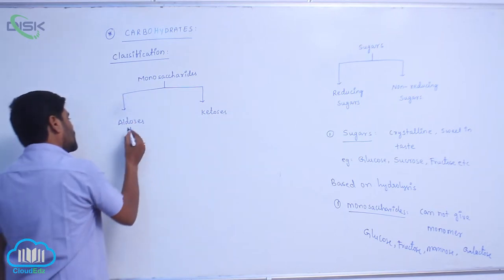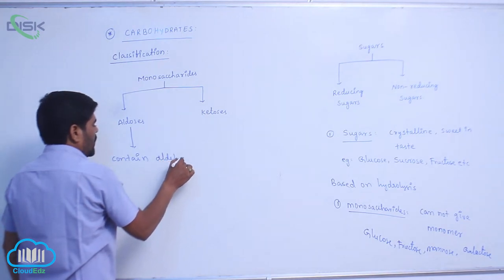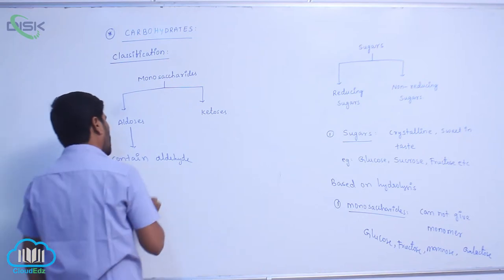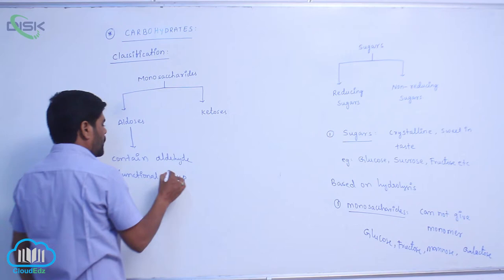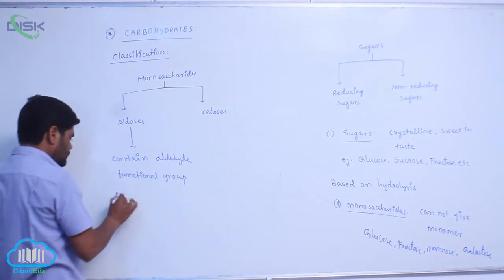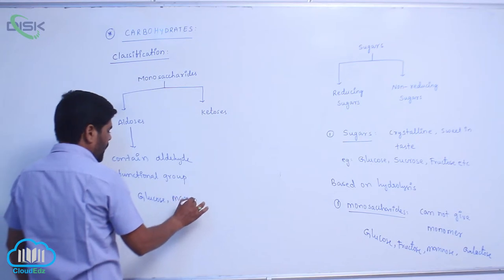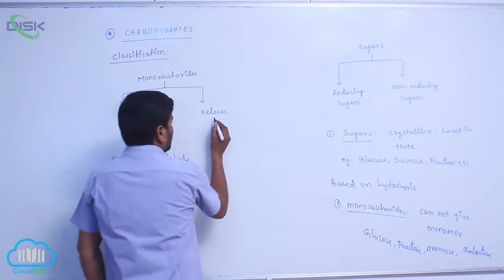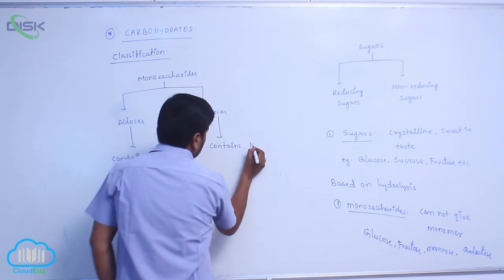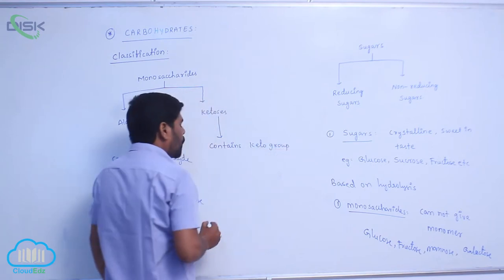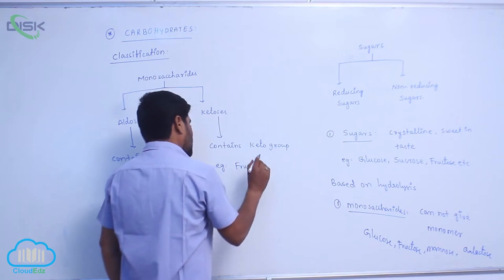Aldoses contain an aldehyde functional group. Examples of aldoses are glucose and mannose. Ketoses contain a keto group. The example for ketoses is fructose.